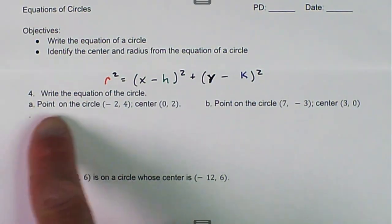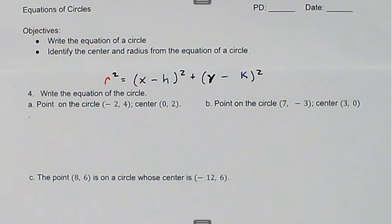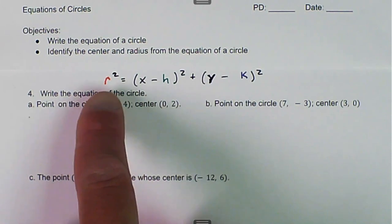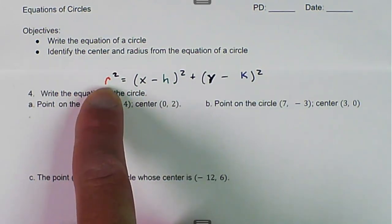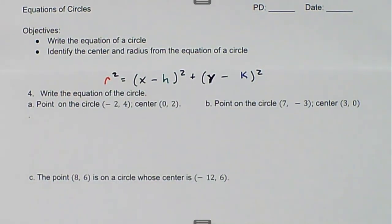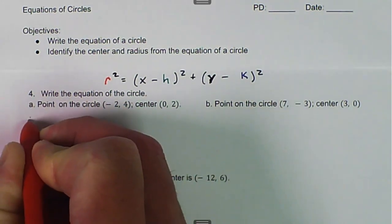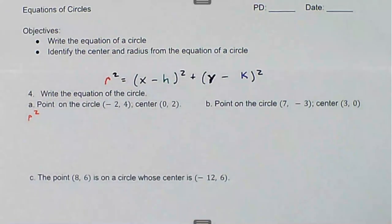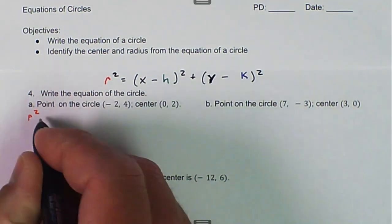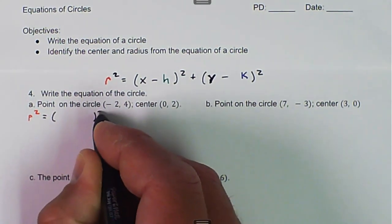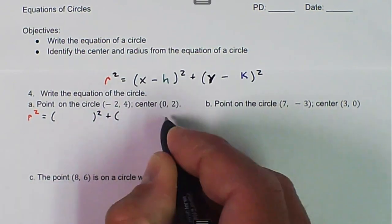Here, we want to write the equation of that circle. The only thing that is missing — we have five variables — and the only thing that is missing is the radius. So we can fill in all those values and then use that to calculate our radius. We don't know what r is, so we are going to say r squared is unknown. That is going to be equal to the things that never change.